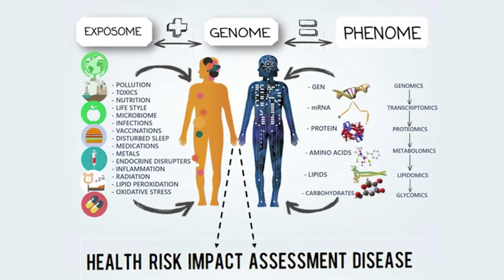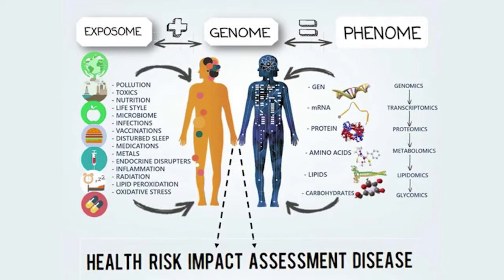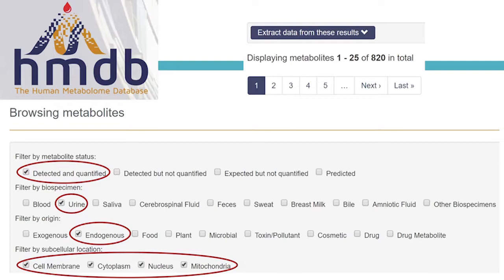Genomics is what might happen. Transcriptomics is what appears to be happening. Proteomics is what makes it happen. And metabolomics is what is happening now or has happened. I'm treating someone now — I need to know what's happening now. I use metabolomics as a way to prove it right now, at the level of the metabolome, because it's what we can show objectively — here is what's improving.